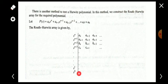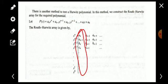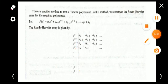After completing the array down to s^0, observe the first column of the Routh array. If all elements in the first column are positive, then the polynomial is Hurwitz. If there are any sign changes, the polynomial is not Hurwitz. That is the procedure we follow.